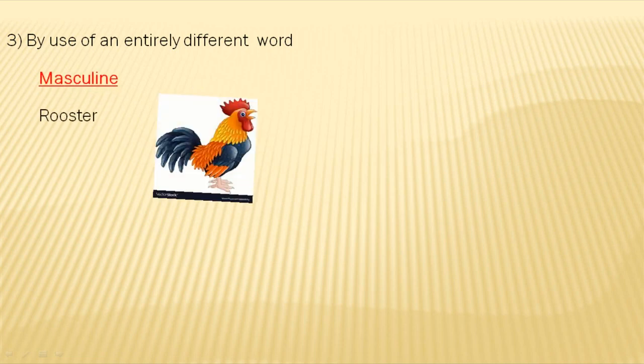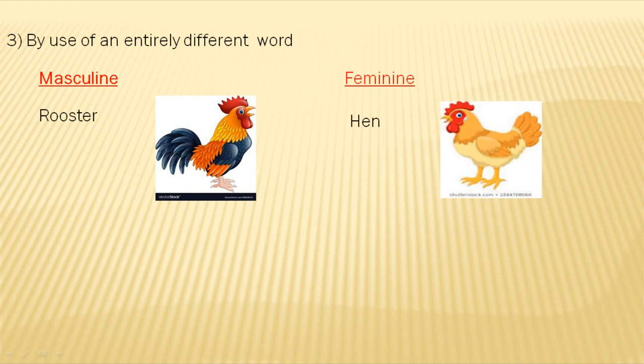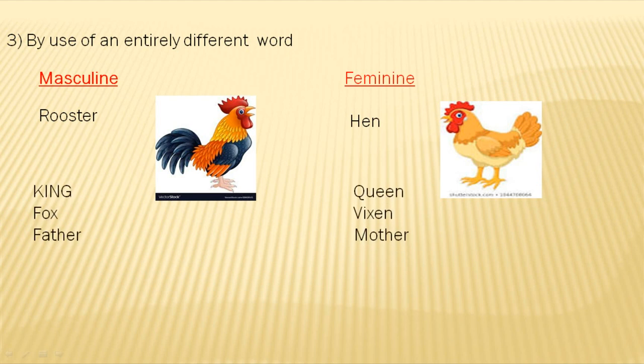We will see the third way: by use of an entirely different word for masculine. Masculine gender: rooster becomes hen in feminine gender. King becomes queen, fox becomes vixen, father becomes mother.